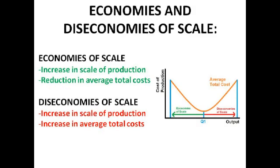Moving back to the diagram — along the bottom is output and along the side is cost of production. When increasing output at the start, we get economies of scale because we're producing more, and the increasing scale of production causes a reduction in average total costs — that's why it goes downwards. Then we hit productive efficiency at Q1, and after that, increased production actually causes average total costs to rise. Though in real life it's not quite as dramatic as on the diagram.